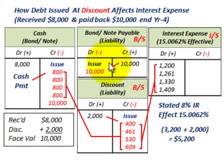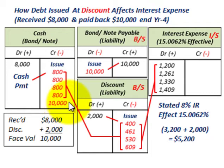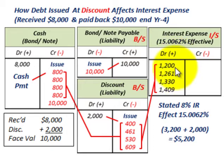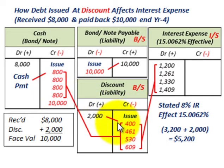One other thing: at the end of the period when the loan matures, the loan of $10,000 is debited to remove it from the balance sheet, and a cash payment of $10,000 is made to reduce the cash account. In both cases — issued at a premium and issued at a discount — the interest expense on the income statement is different from the cash payment made, based on the amortization done either for the premium or the discount on the loan.